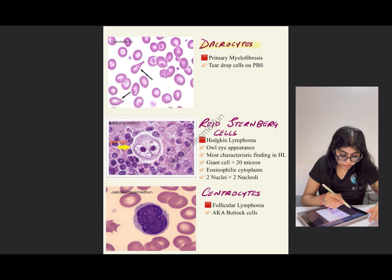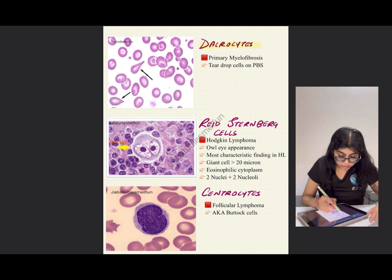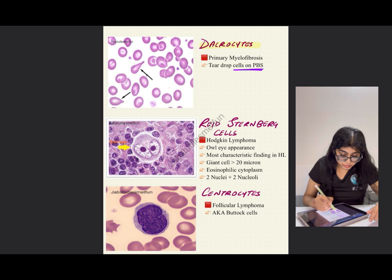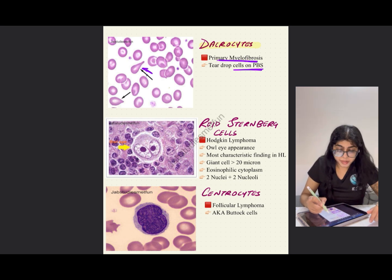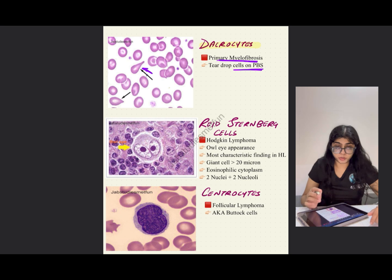Dacrocytes are teardrop cells seen on peripheral blood smear, as shown in the figure, and they are mostly seen in primary myelofibrosis.